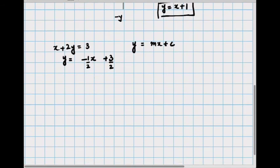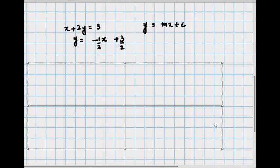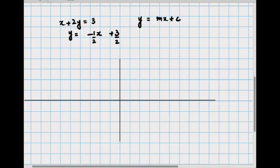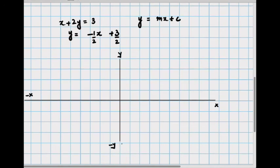So again we will draw the coordinate system and mark the x and the y axis. Comparing this equation with the standard form we get that the slope of this line is m is equal to minus 1 over 2 and what does that mean?